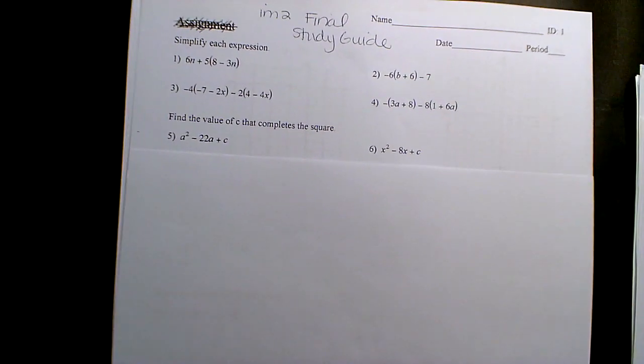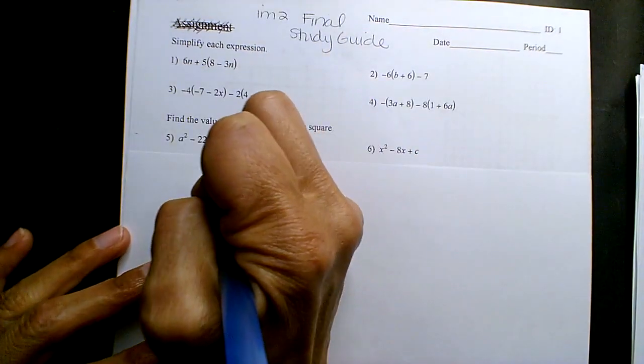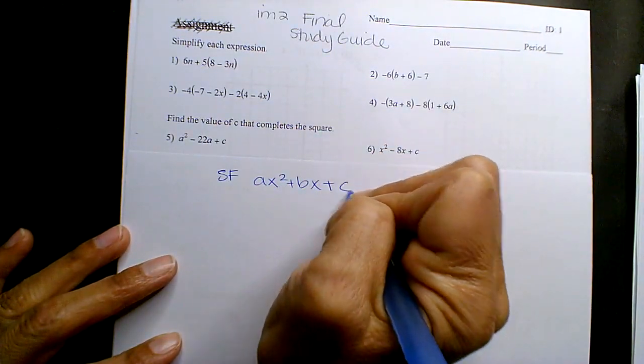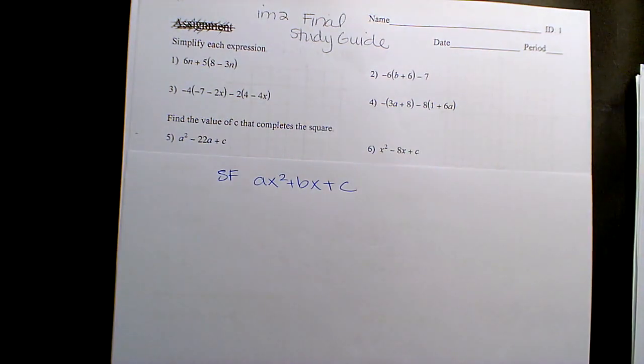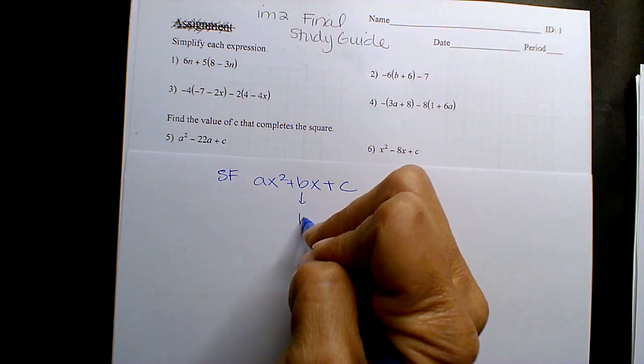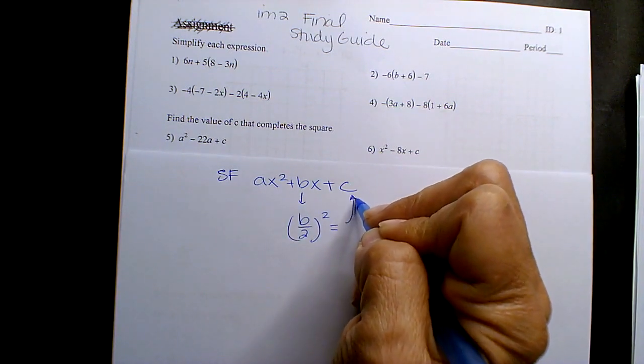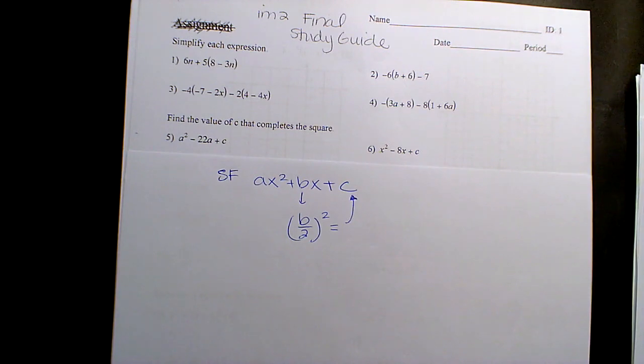Standard form of a quadratic is ax squared plus bx plus c. Now, your b value divided by 2 squared is what completes the square and gives you that c value.